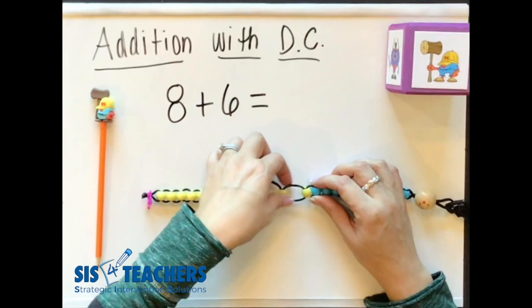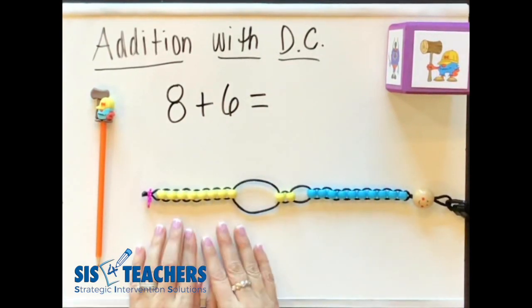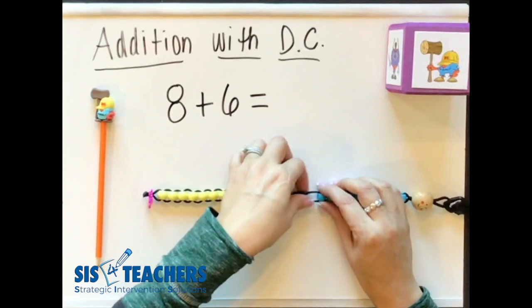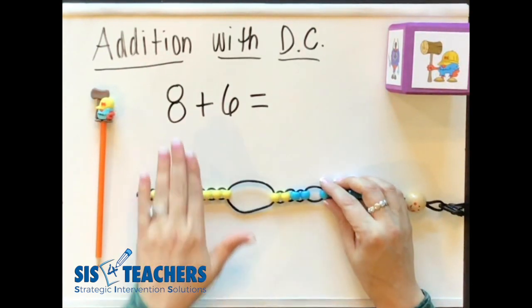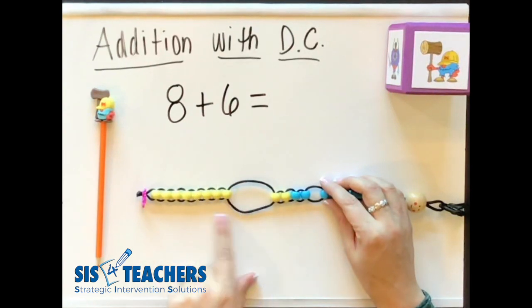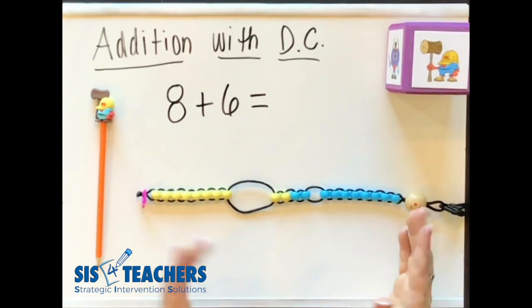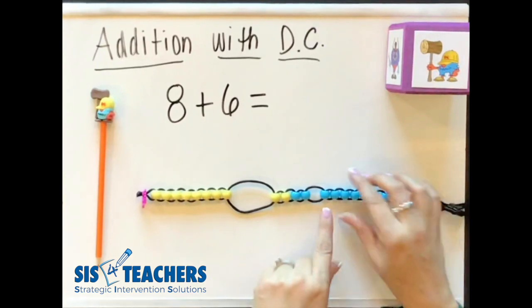Each of the counting buddy juniors, the seniors have 10 of one color and 10 of another. We have counting buddy juniors that are used in kindergarten and preschool that just have 5 and 5, but for adding numbers that are sums beyond 10, the junior is really a great way when you're looking within sums of 20.